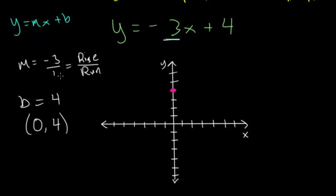So down 3 right 1. So 1, 2, 3, and then right 1. So right there, we can do it again. Down 1, 2, 3, right 1. Down 1, 2, 3, and right 1.